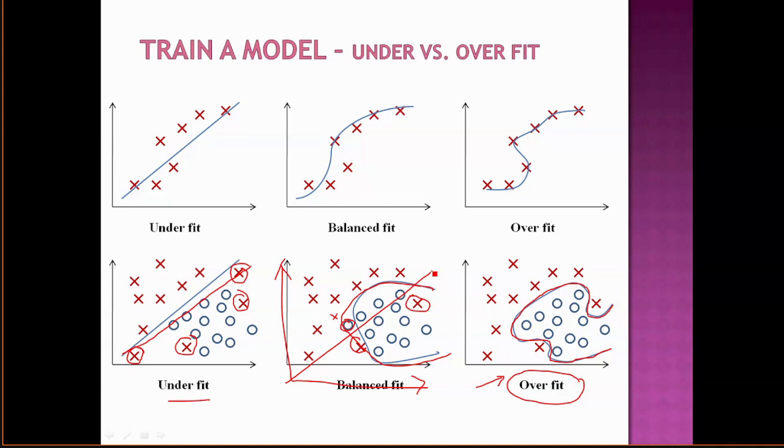When we go to three-dimensional perspective, we can express the same thing using a plane. So if the data can be segregated by a plane then we call it a linear data or the data belonging to the different classes. When we go to more dimensions we have to go for hyperplanes. So that's how we define linear and non-linear data.